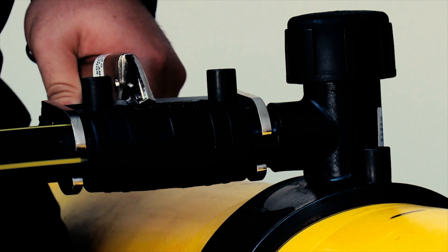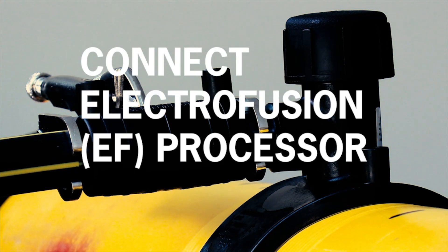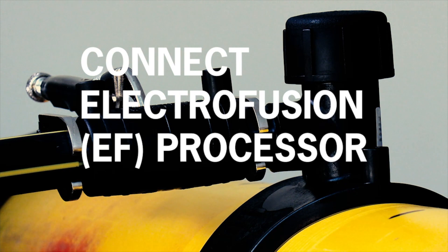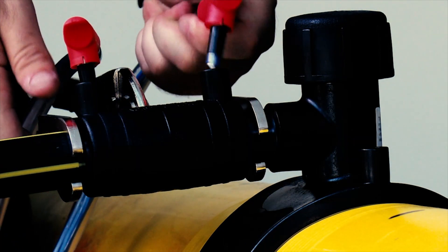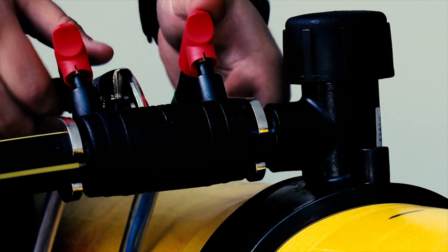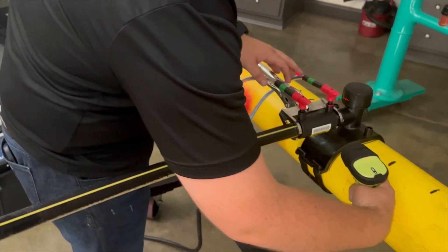Part 6: Energize the coupling. Now it's time to connect your electrofusion processor to the outlet and fuse the joint. Like before, make sure to follow all guidance included with your processor. Again, verify that the fusion time on the fitting label matches the time displayed on the processor. We recommend fusing these couplings in barcode mode as well.